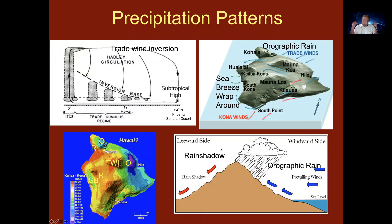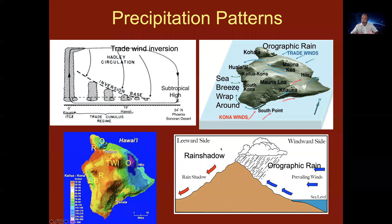The precipitation pattern question is where you go to different spots on the Big Island of Hawaii and match that location with the type of precipitation pattern that you can see. Hawaii has fantastic examples of reasons for it being dry and reasons for it being rainy, and I'll briefly overview your options here.